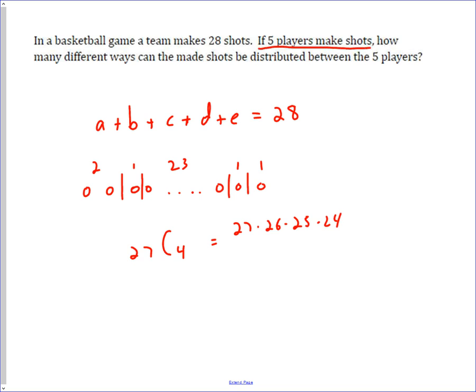The nice thing on this particular problem is 4 times 3 times 2 equals 24, so it's just 27 times 26 times 25, which turns out to be 17,550.